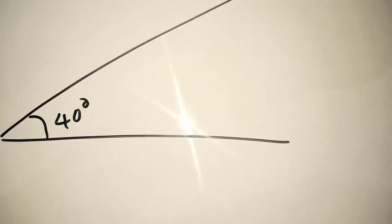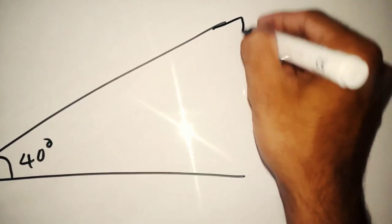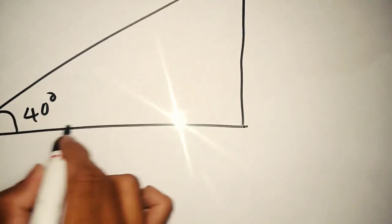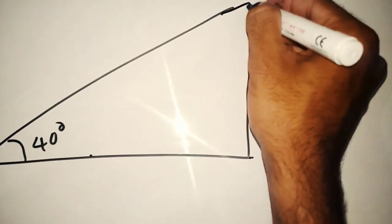There is a tower. The angle is 40 degrees. The distance to the tower is 20 meters. I am standing here. This angle is 50 degrees.